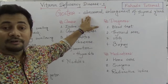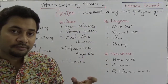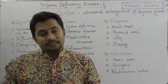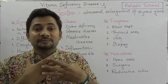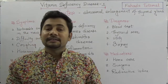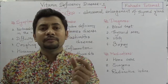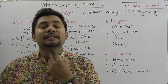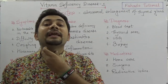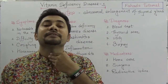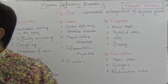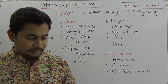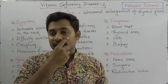Goiter is an abnormal enlargement of the thyroid gland. It's a condition where the thyroid gland becomes enlarged. The thyroid gland is a butterfly-shaped gland which is located in the neck, just beside and just after the Adam's apple. You can see its position if you search on Google.